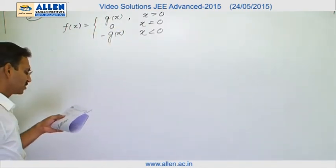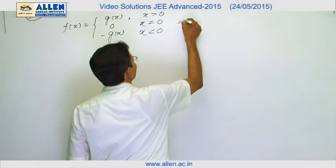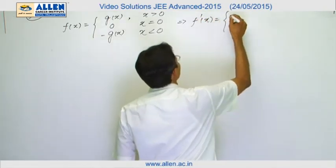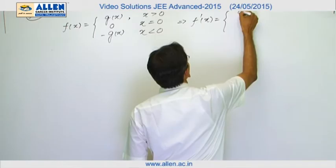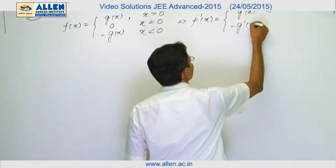Now, option a says f is differentiable at x equals to 0. To know the differentiability, we must differentiate it as gx is given as differentiable function. So, it will be g dash x for x greater than 0 and minus g dash x for x less than 0.